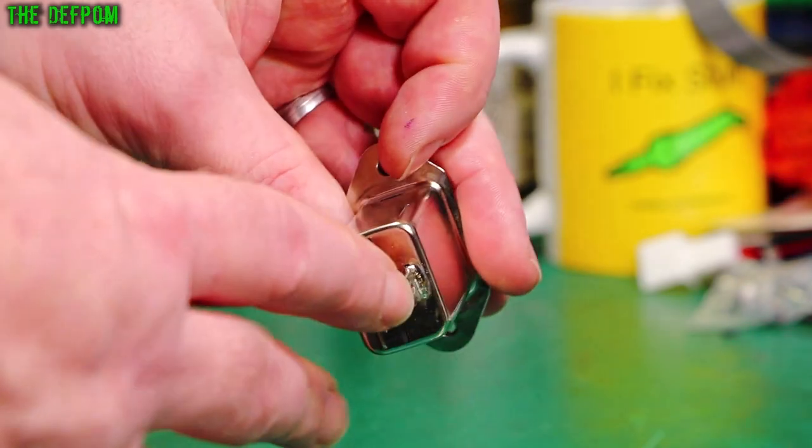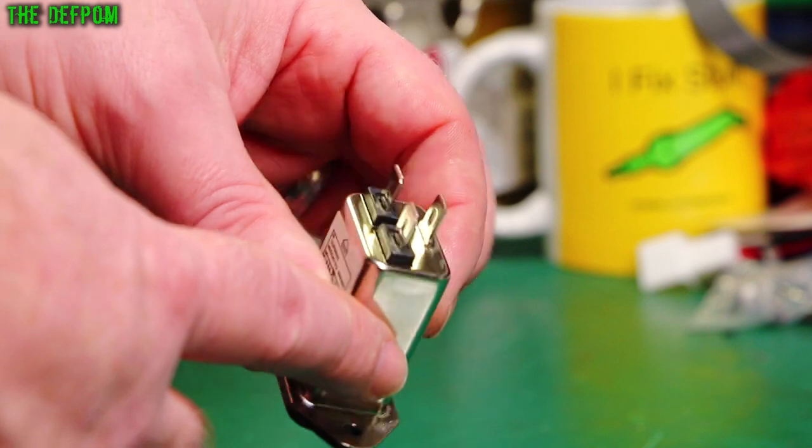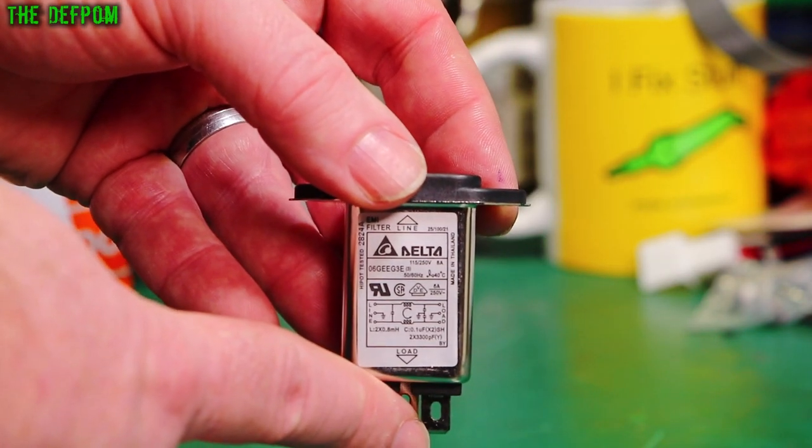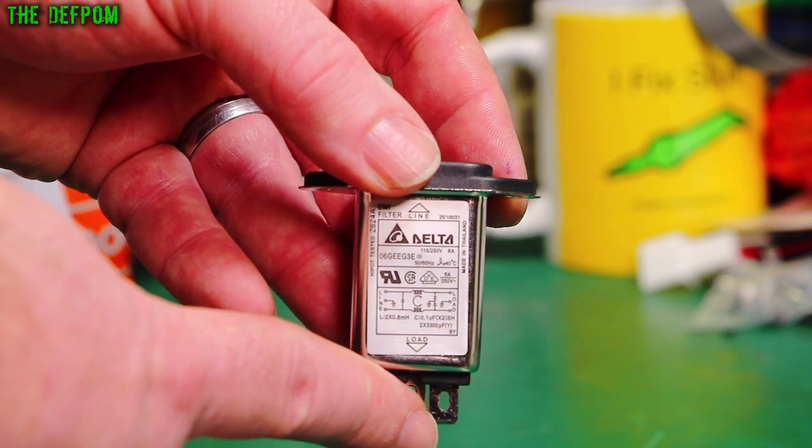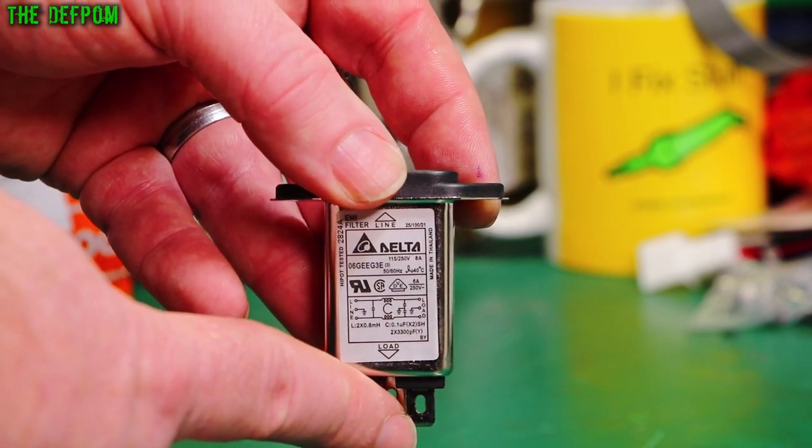Earthed pin at the back there. It's actually onto the chassis so that will ground the chassis out at the same time. Although you wouldn't rely on that, you'd do a proper earth point anyway. Yeah well I don't know the specs there. So Delta 06 GEE G3E, 50 60 hertz, 115 to 250 volt. So universal.